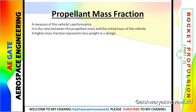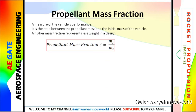Next comes propellant mass fraction, which has no unit and is used for vehicle performance. It is the ratio between the propellant mass and the initial mass of the vehicle. A higher mass fraction represents less weight in design. When designing a rocket engine, the mass fraction should be high — less weight means less drag, and the thrust will be high. It is denoted by the letter tau.